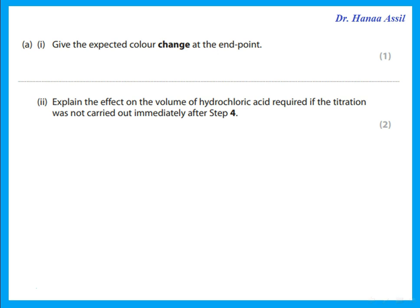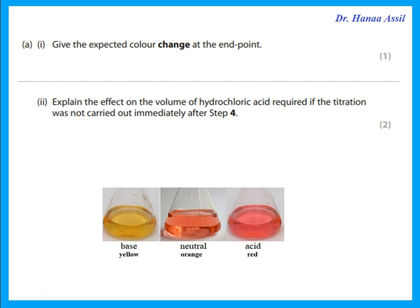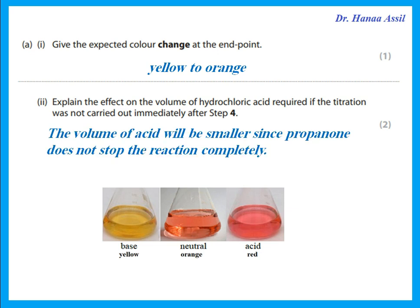Give the expected color change at the end point. The sample was added to a sodium hydroxide solution and titrated with HCl until neutral, so methyl orange should change from yellow to orange. If the titration was not carried out immediately after step four, the volume of hydrochloric acid required would be smaller — because propanone does not stop the reaction completely, it only slows it down, so the solution continues to react and more hydroxide is consumed.